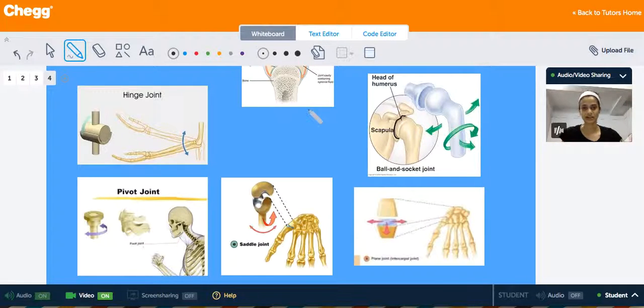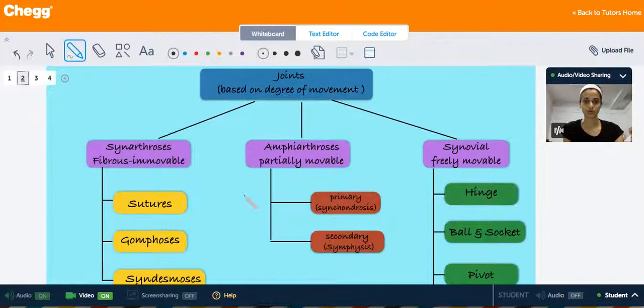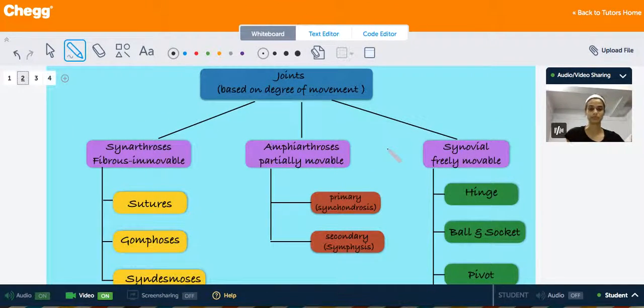So that covers the different types of synovial joints and the types of movement that they allow. So let's go back to our classification table once again. Last is the amphiarthrosis, which are partially movable. And these are basically characterized by, they are held together by cartilage. This can be either hyaline cartilage or fibrocartilage. Depending on what type of cartilage holds these kinds of joints together, they're classified into primary or synchondrosis, or secondary or symphysis.